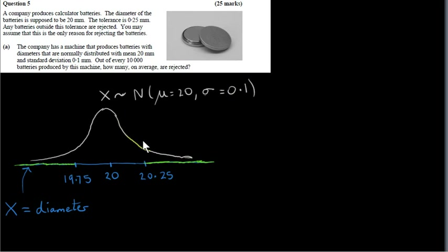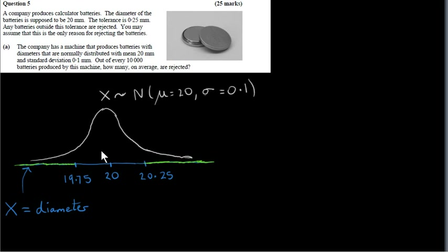If we want to find the probability that a randomly selected battery has a diameter between any two values, we get the area underneath the distribution between those values. We are interested in the probability that a randomly selected battery has a diameter either less than 19.75 or greater than 20.25 — that gives us the probability of rejecting that battery. So we're interested in the area under this normal distribution to the left of 19.75 and to the right of 20.25.